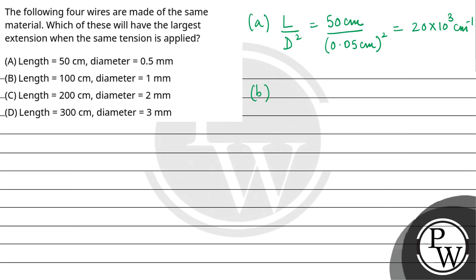Ab second wire ke liye, aapke paas length given hai 100 cm and diameter 1 mm hai, so it will be 0.1 cm square. And this will be 10 into 10 raised to the power 3 cm inverse.